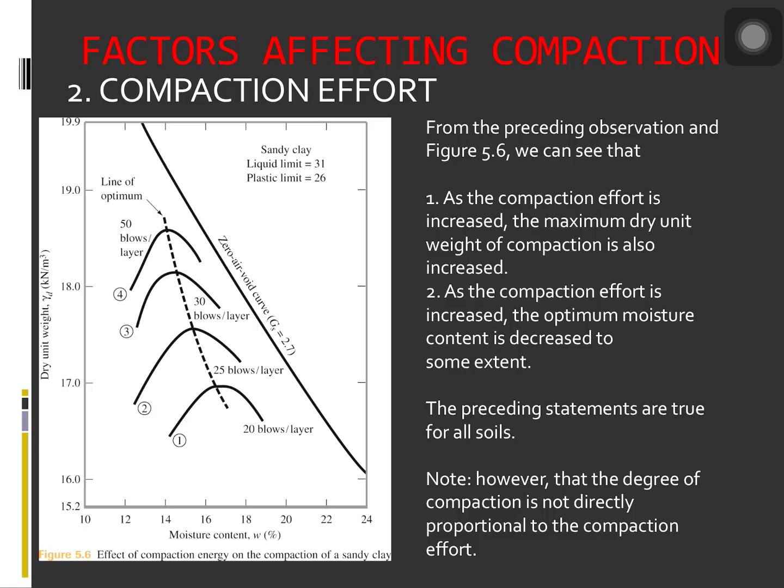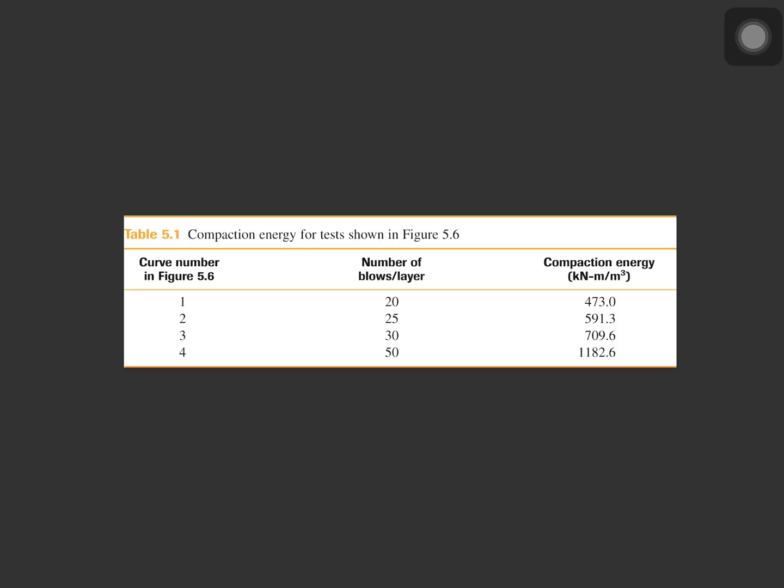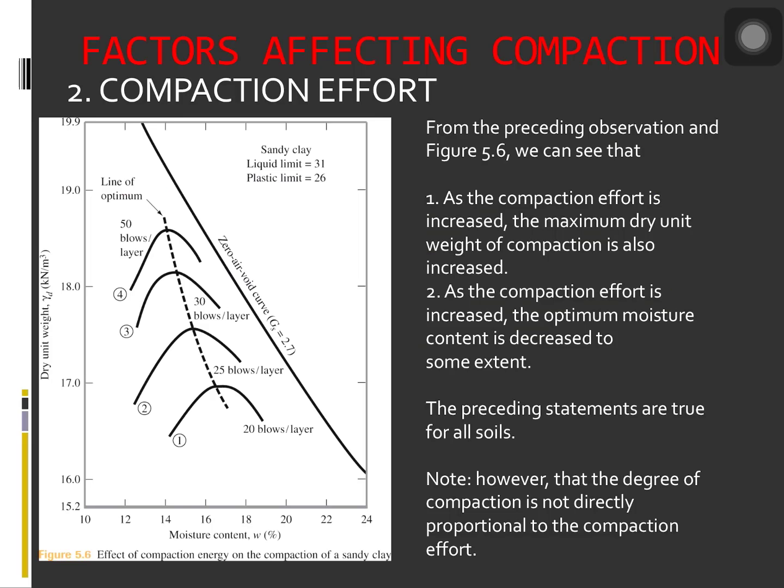Changing the amount of blows per layer at four different compaction curves, we can compute the amount of compaction energy exerted at each soil. Here in our table is the compaction energy for each different type of curve: curve 1, 2, 3, and 4, corresponding to the number of layers, corresponding to the number of blows per layer, and the equivalent compaction energy.